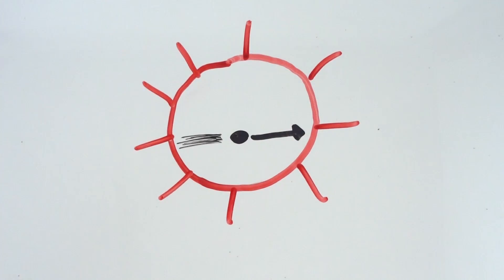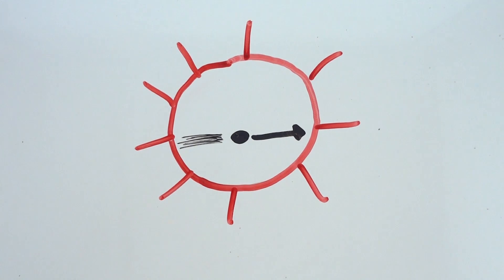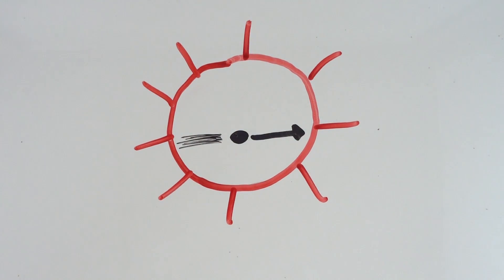The Kepler telescope looked at 42,000 stars looking for a planet to cross over it. Through this planet going across the host star, you were able to detect how far away the planet is from the host star and how big it is through two simple methods.